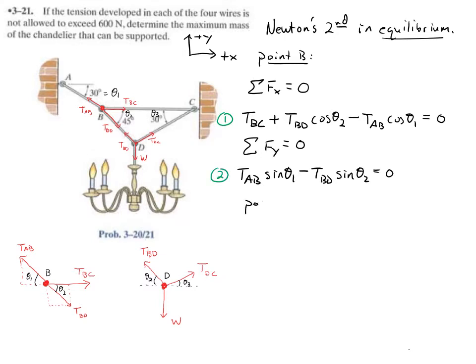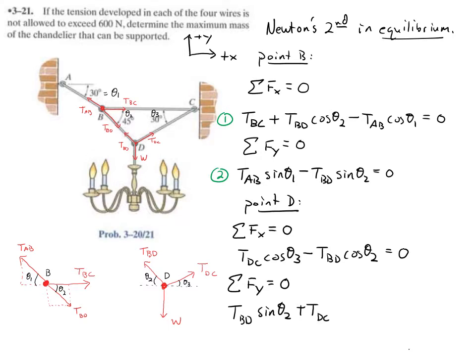And now we're going to do the same thing for point D. So let's write down sum of the forces in the x direction equals to zero, that tells me TDC cosine theta 3 minus TBD cosine theta 2 equals to zero. And the sum of the forces in the y direction equals to zero tells me that TBD sine theta 2 plus TDC sine theta 3 minus W, which is the weight of the chandelier equals to zero. And let's call this 3 and this 4.